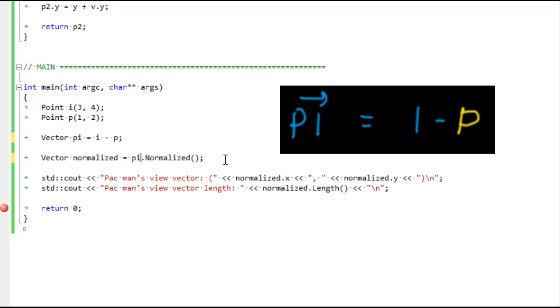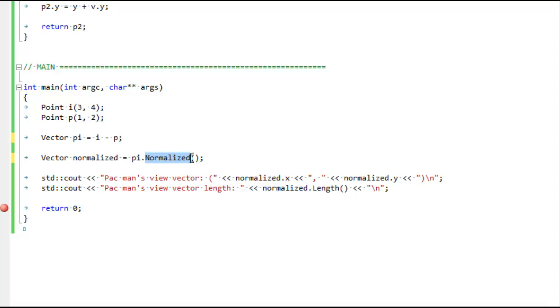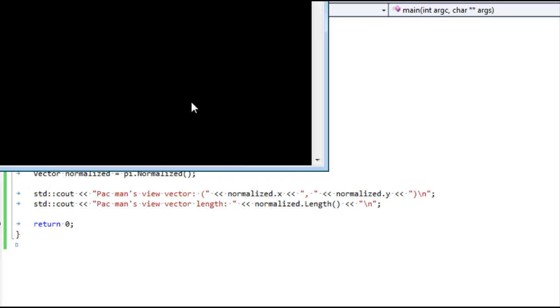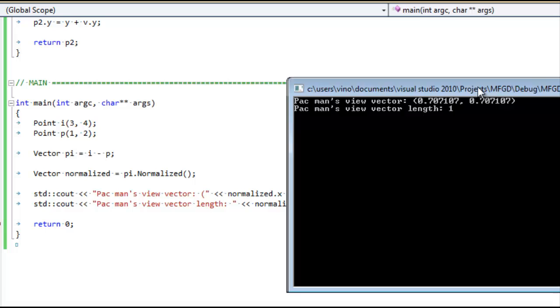And so then we take PI and we normalize it, and we store that in this normalized vector here. And then we print out the normalized X and Y of the normalized vector so we can see what those values are, and the total length of this vector. And so let's see if I messed up. Nope, looks good to me.